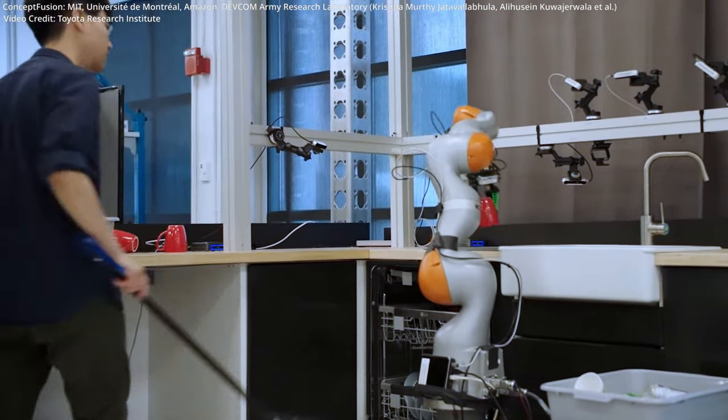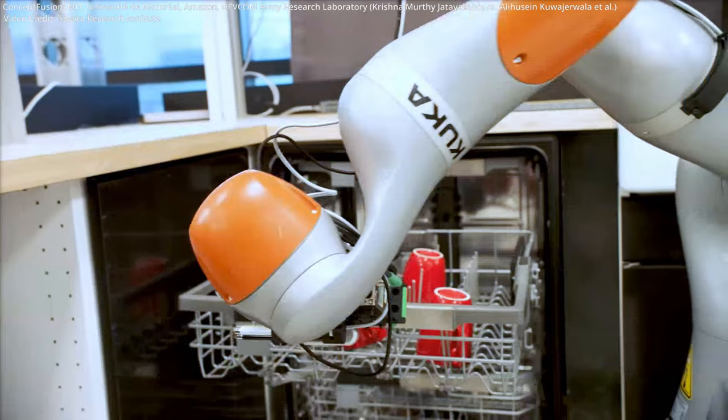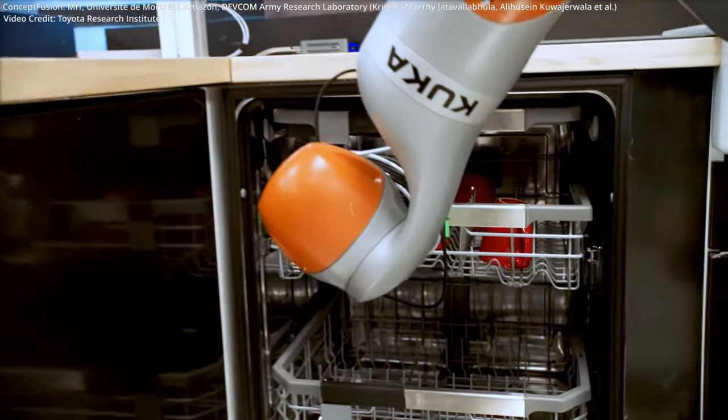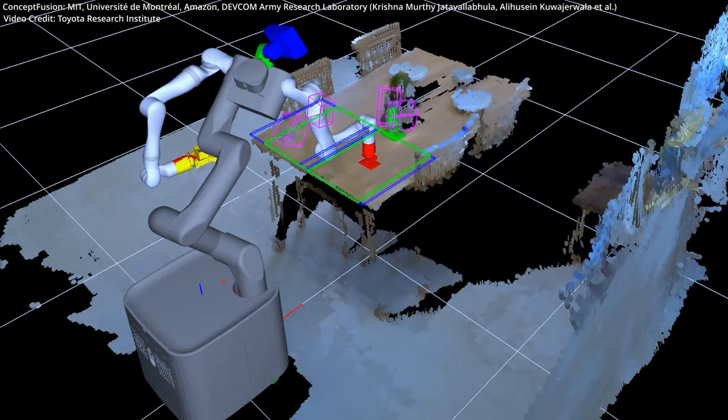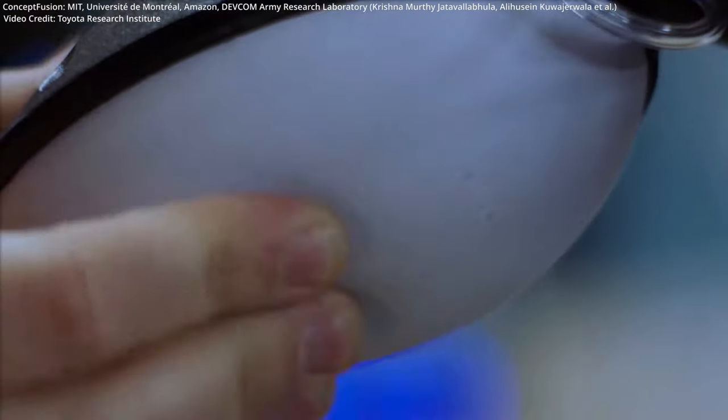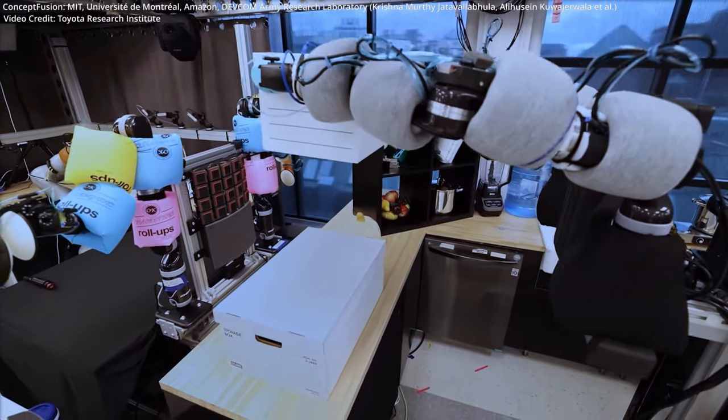Number 3. Zero-shot reasoning, efficient and versatile environmental interaction. Time-consuming tuning and training of robots is now a thing of the past due to the model's zero-shot reasoning, which leverages open-set features fused into 3D maps, enabling robots to effectively reason about their surroundings without additional adjustments.